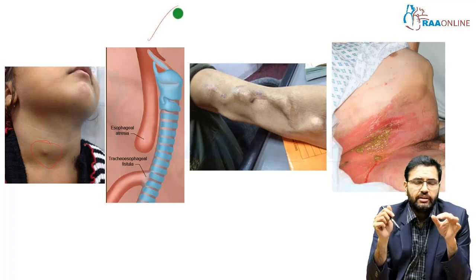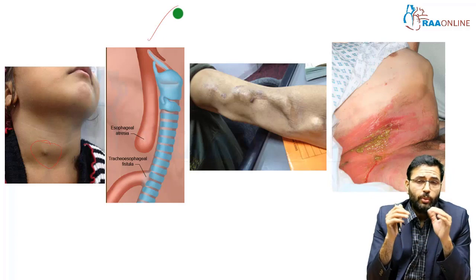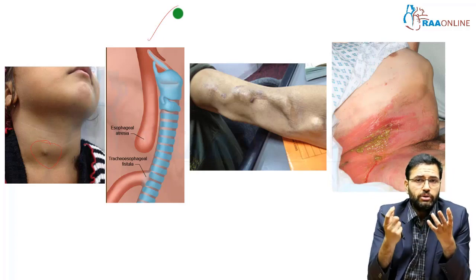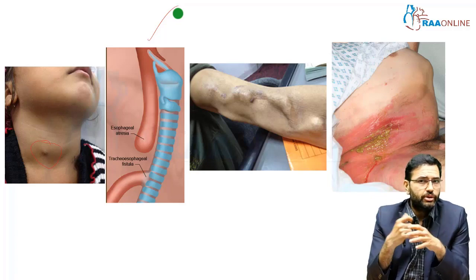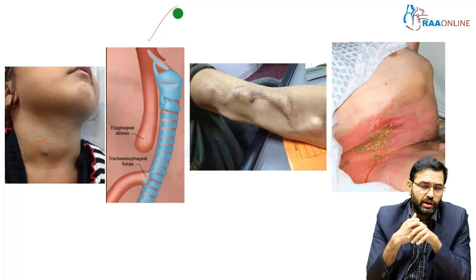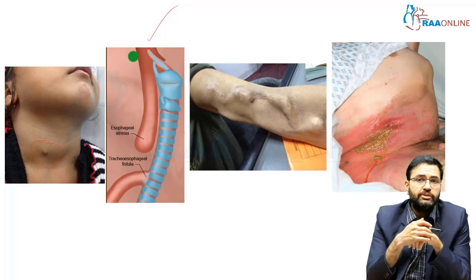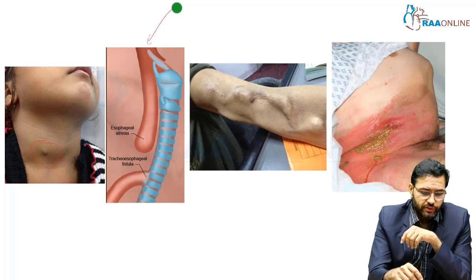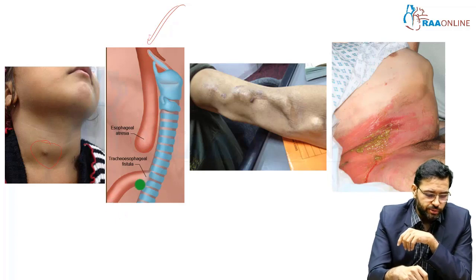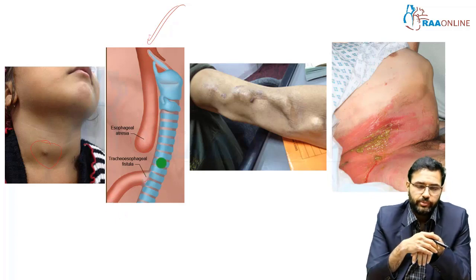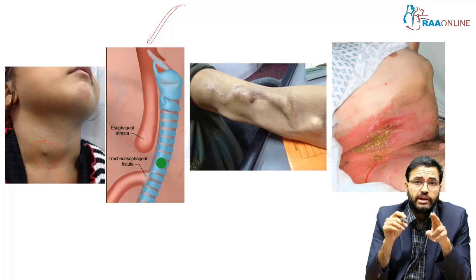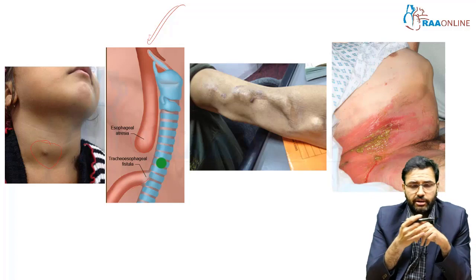This is a classical example of the most common type of tracheoesophageal fistula — more accurately, esophageal atresia with a tracheoesophageal fistula. This is a Type C esophageal atresia with a TEF, wherein there is a blind-ending upper pouch and a lower pouch communicating with the airway. This is a common cause for frothing of saliva and respiratory distress in the newborn period, and is surgically correctable.